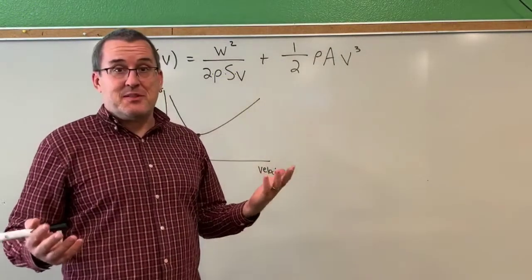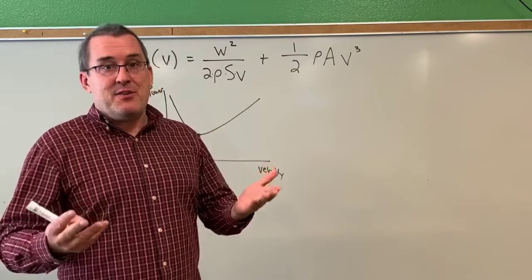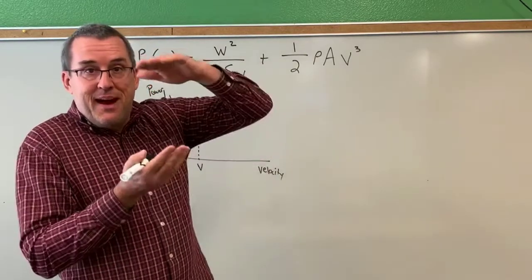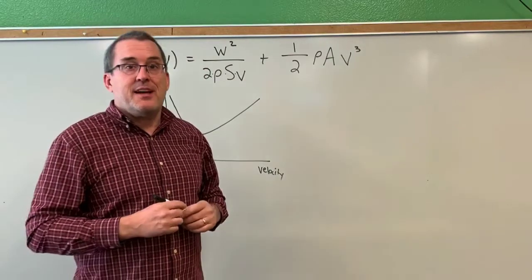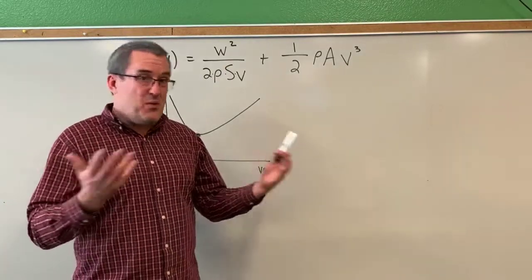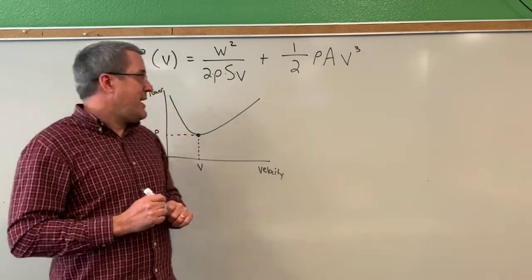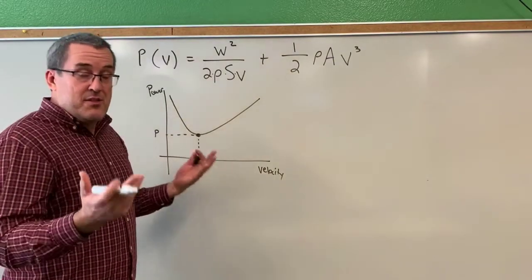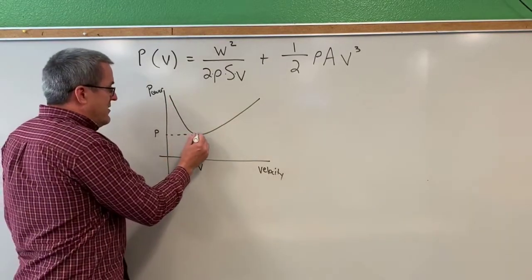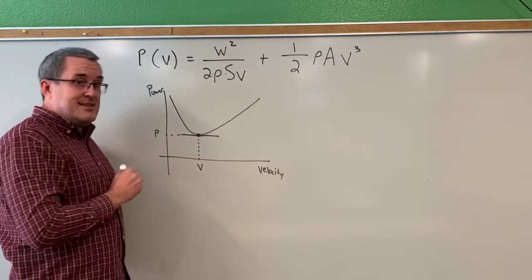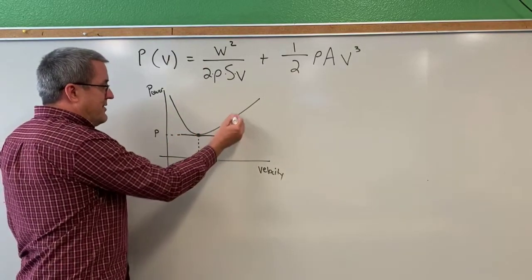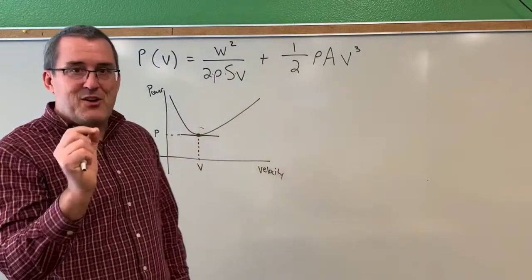So we've seen on Desmos that there is indeed a minimum value. There's a place on this graph for some input quantity V, the velocity of the bird, and some output quantity P, the power required to maintain flight, such that that power is minimized. It's optimized as a minimum value. We just want to see what is that relationship between all those variables and that power and that velocity. So the theory is this. When a graph, when a function reaches a minimum that we saw on Desmos, the derivative at that spot is indeed zero. It's the only place where the derivative is zero. The derivative is negative on this side, the derivative is positive on this side, but there is that one minimum value where the derivative is zero.